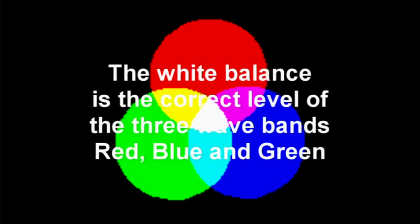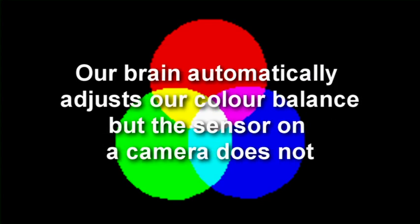Any colour can be reproduced by mixing parts of these colours. The colours are only recorded properly when the three wave bands are in correct balance. Our brain automatically adjusts these colours in fluorescent, incandescent, and halogen lighting, and most people are not aware of the changes compared to normal daylight. The sensors will pick up on this, and unless a correction is made, the result will be unnatural colours. The white balance control makes these corrections.